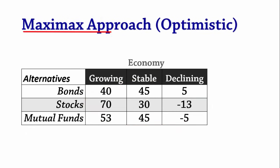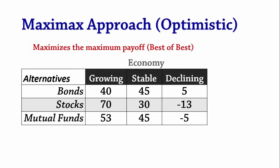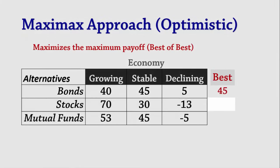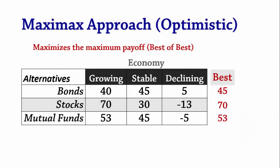The maximax or optimistic approach. Using this optimistic approach, we choose the alternative with the best possible payoff. Looking at bonds, the best payoff is 45; the best is 70 for stocks; and the best is 53 for mutual funds. The overall best is 70, therefore the decision is to invest in stocks.